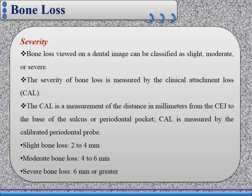According to the severity, bone loss viewed on dental image can be classified as slight or mild, moderate, or severe. This severity of bone loss is measured by clinical attachment loss, which means measurement of the distance in mm from the cementoenamel junction to the base of the sulcus or periodontal pocket, and is usually measured by a calibrated periodontal probe. Slight bone loss occurs in the range of 2 to 4 mm, and severe bone loss is about 6 mm or greater.